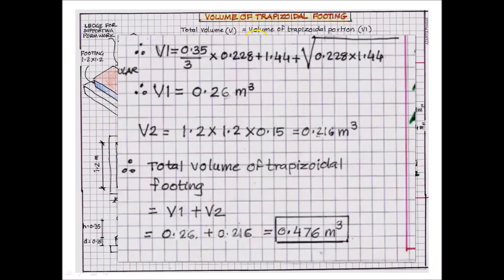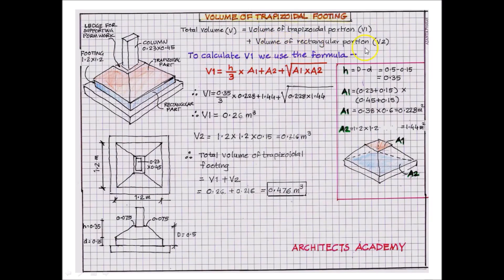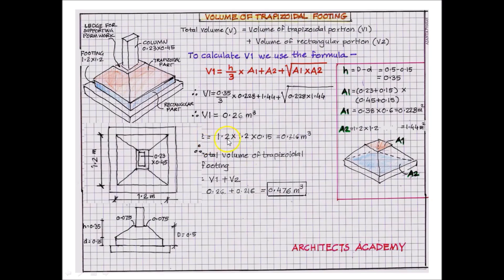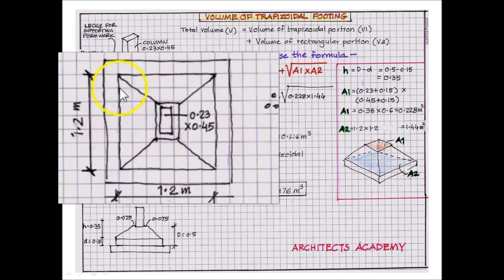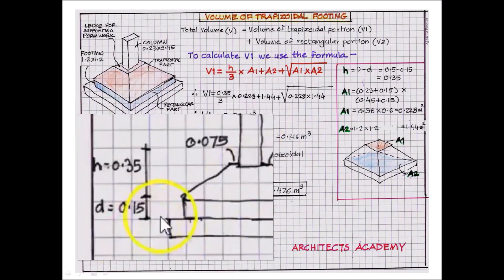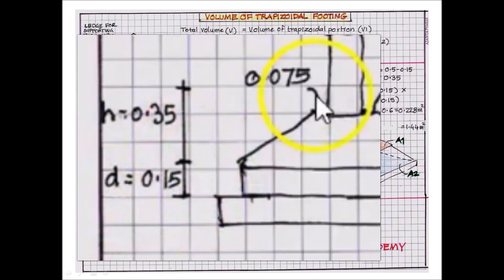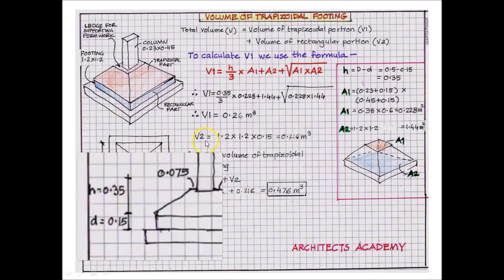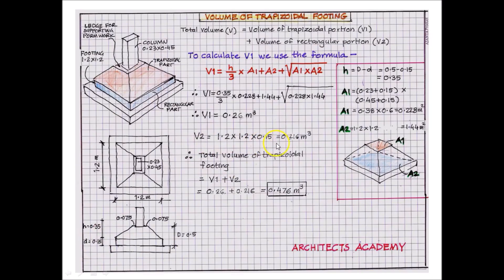Now for the second part — the volume of the rectangular portion. The footing dimension is 1.2 by 1.2 meters, and the height of the rectangular portion is 0.15 meters. Therefore V2 = 1.2 × 1.2 × 0.15 = 0.216 cubic meters.